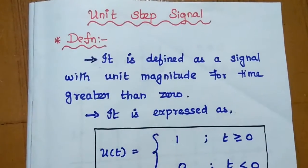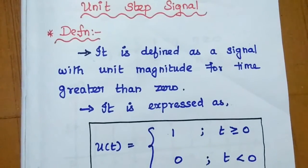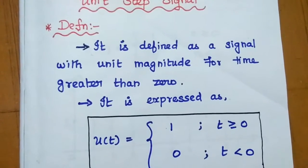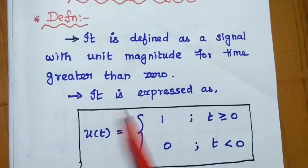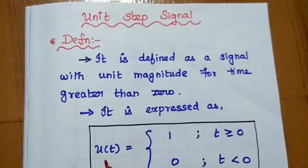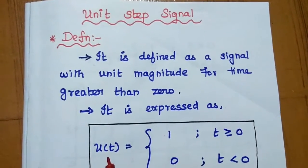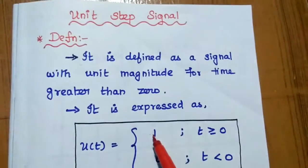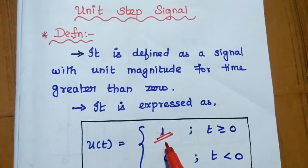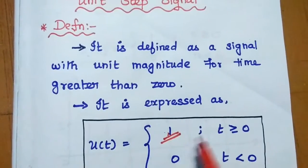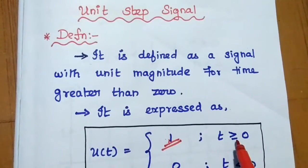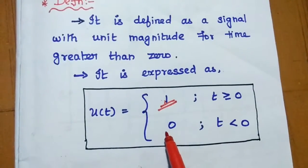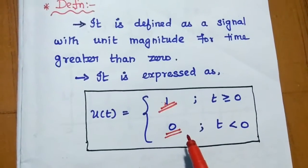The unit step signal is defined as a signal with unit magnitude for time greater than or equal to 0. It is expressed as U(T). U(T) equals 1 whenever the time is greater than or equal to 0. If time is less than 0, the magnitude becomes 0 — there is no value of the signal.